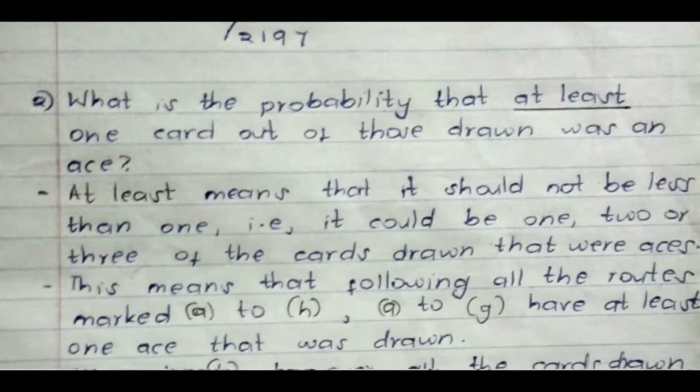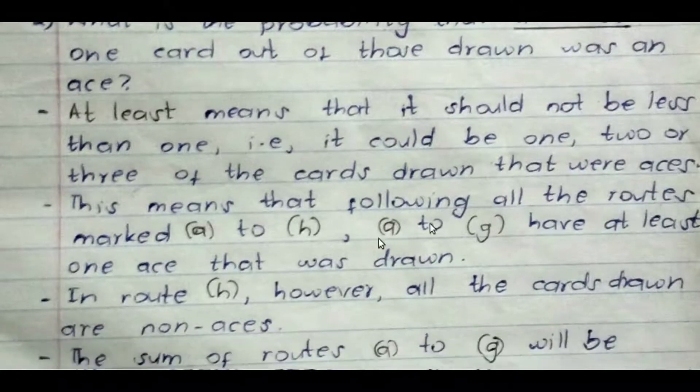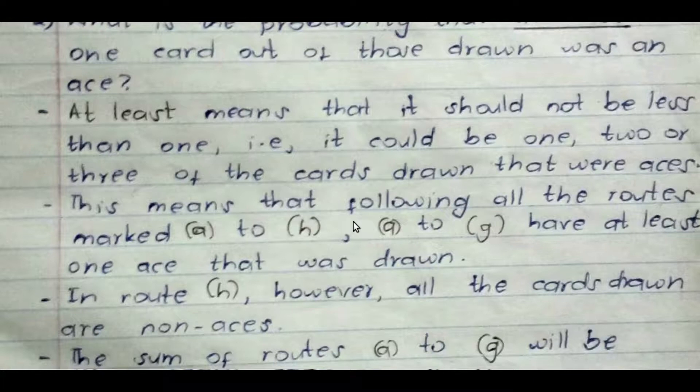Now there is the second part of that question, which is: what's the probability that at least one card out of those drawn was an ace? Meaning, at every chance, there was at least one of them. Either there was one, or two, or all of them were aces, but at least there was nothing like it wasn't picked. It should not be less than one, i.e., it could be one, it could be two, it could be three of the cards drawn that were aces.